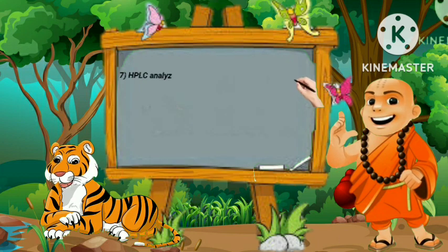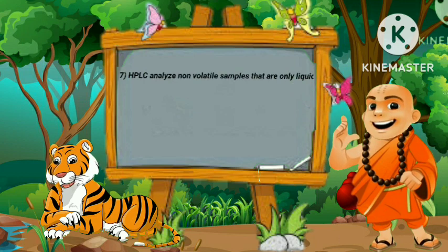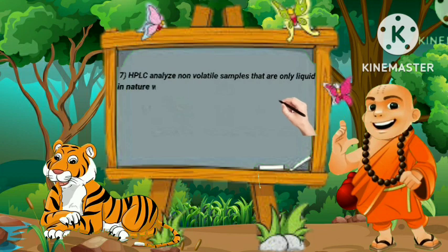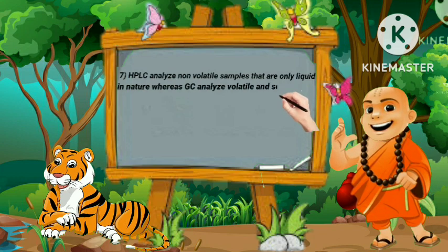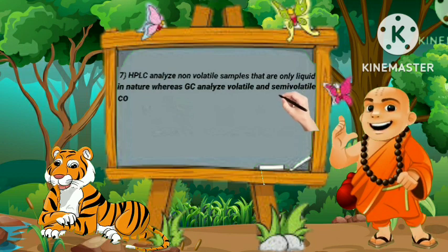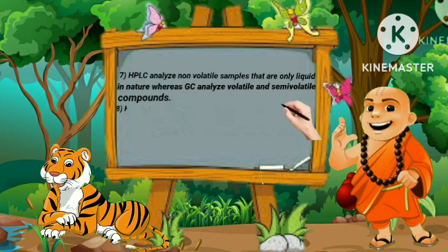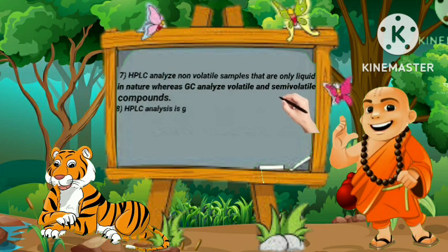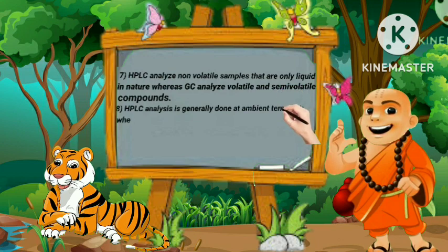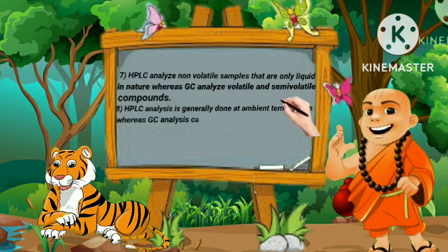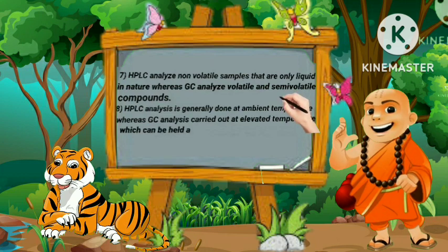Seventh, HPLC analyzes non-volatile samples that are only liquid in nature, whereas GC analyzes volatile and semi-volatile compounds. Eighth, HPLC analysis is generally done at ambient temperature, whereas GC analysis is carried out at elevated temperature, which can be held at a constant value (isothermal) or variable as decided by the temperature program.